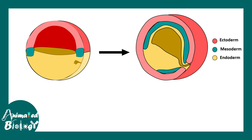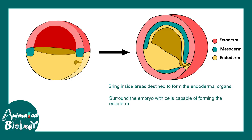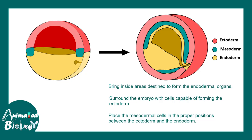In this particular diagram, red represents ectoderm, blue represents mesoderm, and yellow represents endoderm. During the process of frog gastrulation, the goal is to bring the endodermal cells — those that give rise to endoderm — inside the embryo, which are currently outside in the blastocyst stage. Then, we have to surround the embryo with a sheath of ectoderm. Finally, the challenge is to place the mesoderm cells in between the ectoderm and endoderm.